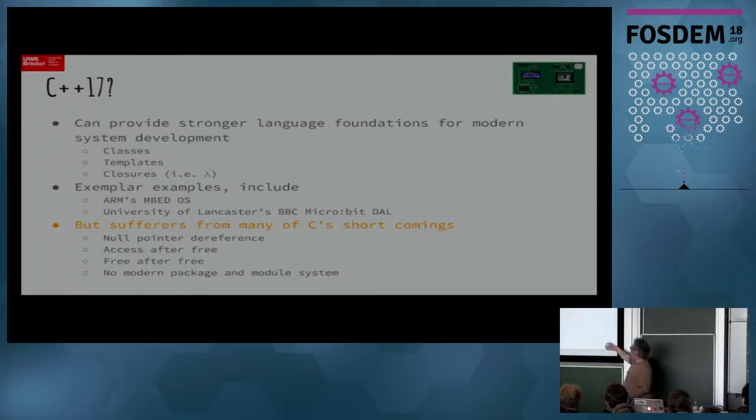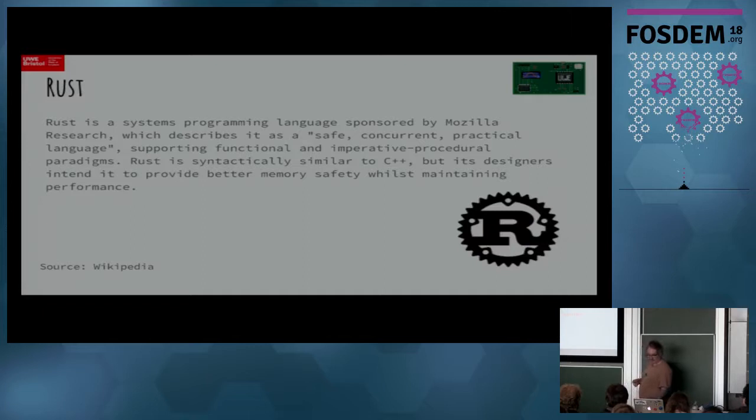Of course C++ suffers from all of C's shortcomings. No null pointer dereferences, access of the tree, buffer overruns, things like that. And more of a, I do think this is quite important. Any of us have programmed with Python or JavaScript and things like that, and Node and stuff, will find that the lack of modern package and module system is quite frustrating. And of course they're still arguing about it in the Standards Committee at C for 17. Maybe one day we'll get there, but not yet.